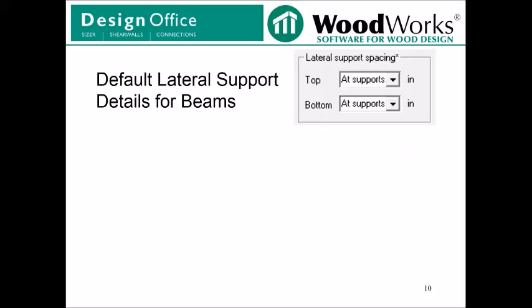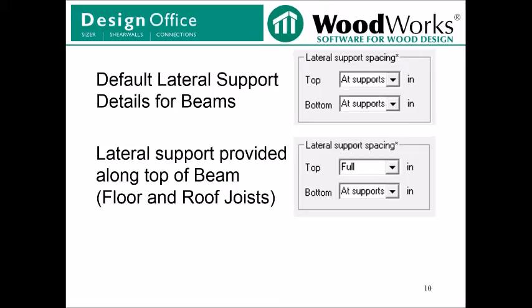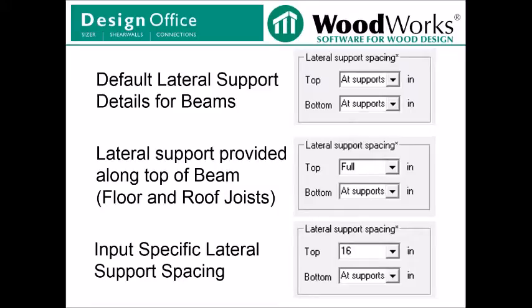When designing a beam in beam mode, if you specify the material type as beam, the default setting of the program is to assume lateral support at the top and bottom of the beam at points of support. If you specify a floor joist or roof joist, since sheathing is fastened to the tops of the members, the default lateral support spacing is to provide full lateral support along the top and support at the bottom at the supports or points of bearing. It's worth mentioning that you can always specify an exact lateral support spacing. For instance, if there were a beam supporting a floor joist system spaced at 16 inches on center, you may want to specify an exact support spacing on top of the beam as it will affect the calculations for CL. In the next few slides, I'll be discussing how the unsupported length LU feature works. And in each case, we'll be looking at the case where lateral support is only provided at the supports or points of bearing.